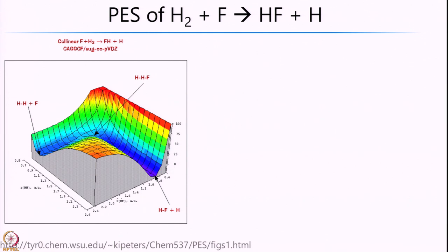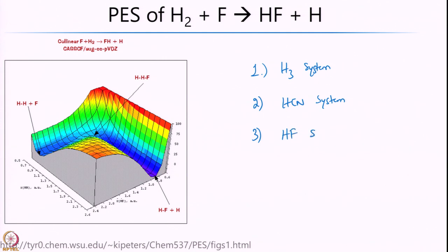So we have now looked at three kinds of potential energy surfaces: first the H3 system, then the HCN system, and finally the H2F system. You must be thinking — why are we even studying this? What is the significance of studying, computing, or understanding these potential energy surfaces?